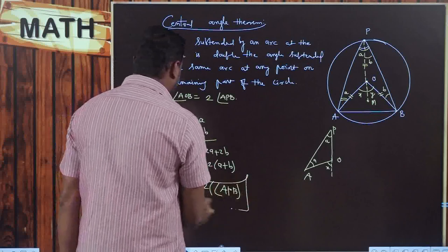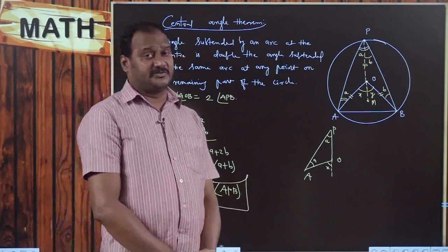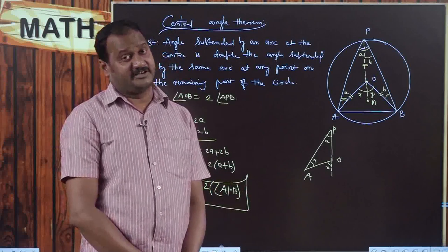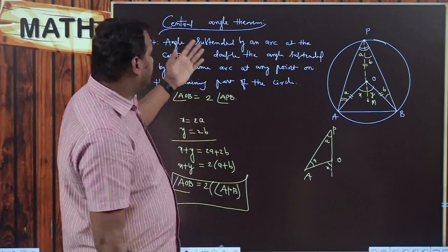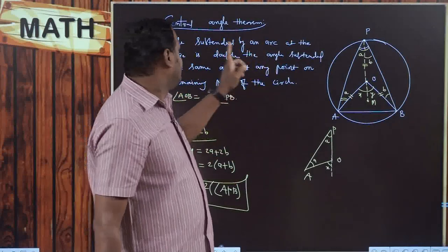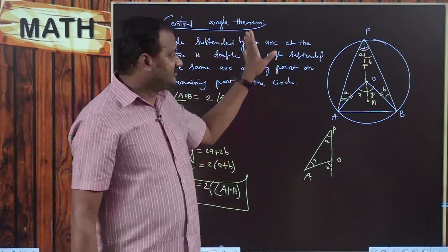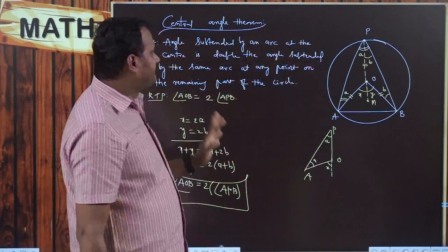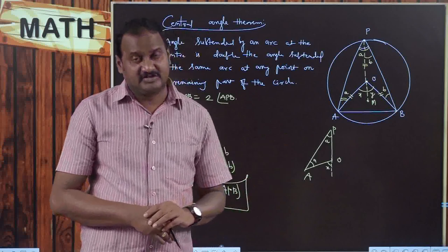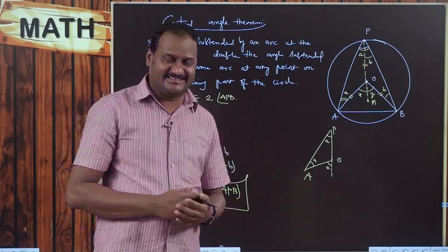This is what is called the central angle theorem. Please remember the statement: the angle subtended by an arc at the center is double the angle subtended by the same arc at any point on the remaining part of the circle. Basing on this we have very important results also, which we will be discussing in the coming module. Hope you understand — enjoy the class. Thank you.